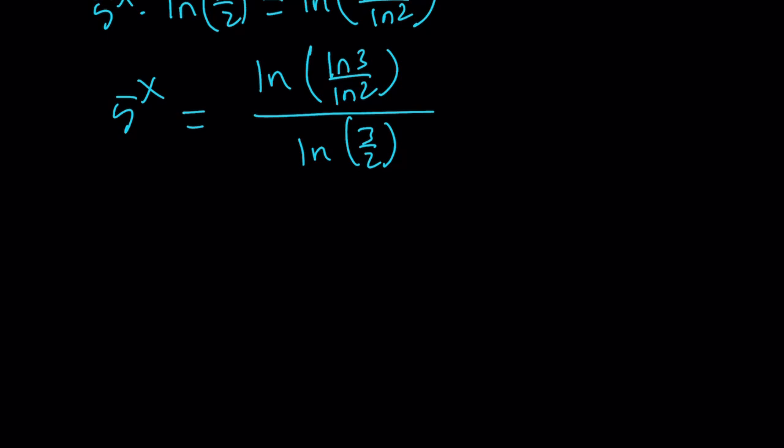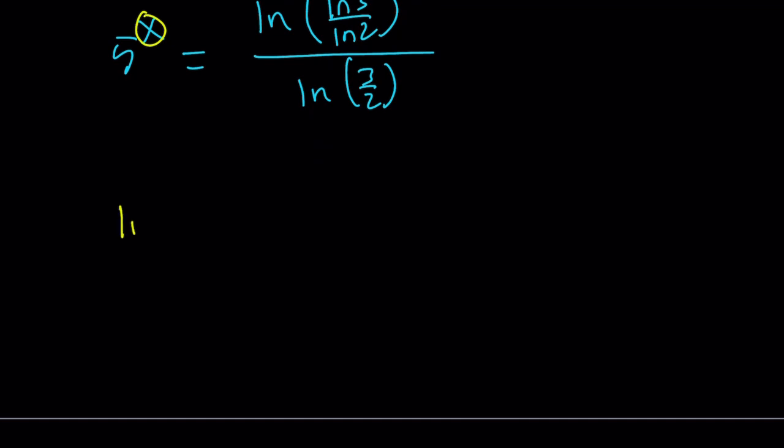And now we need to get rid of the x or bring it down. And x is the exponent. So we need to ln both sides one more time, and guess what? This is going to be the last time we do it. Okay. ln 5 to the x equals... I'll probably need a little bit more room here, so let's move this thing to the front. Okay. ln 5 to the x equals ln ln 3 over ln 2 divided by ln 3 halves.